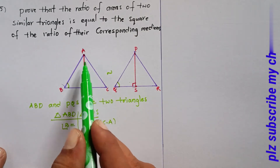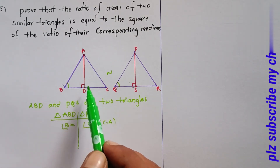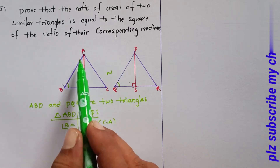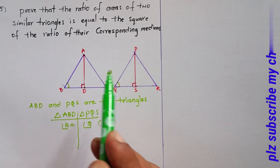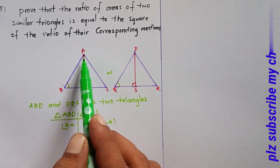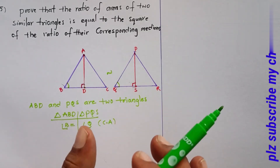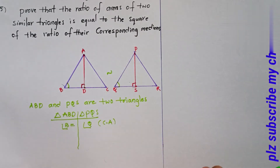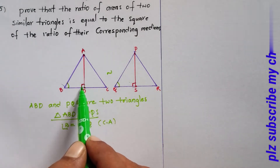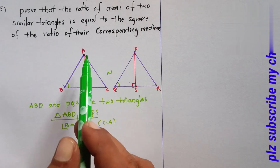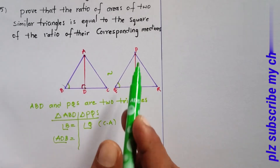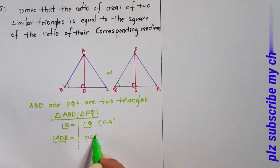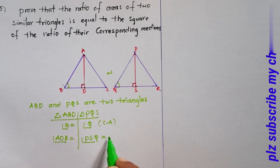Now consider the median, altitude, and height. AD is the height of triangle ABD, and PS is the height of triangle PQS. Both are 90 degrees — angle ADB equals 90 degrees and angle PSQ equals 90 degrees.